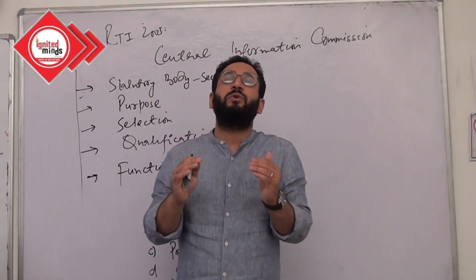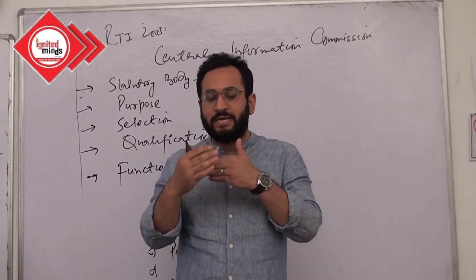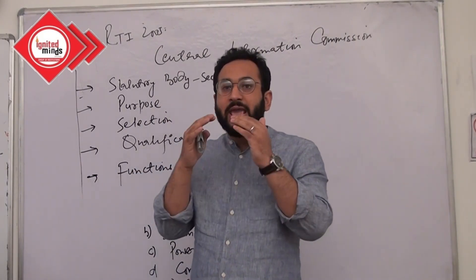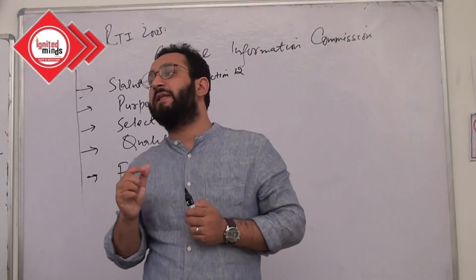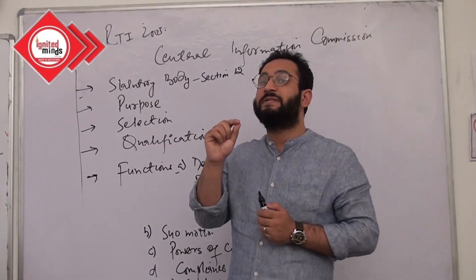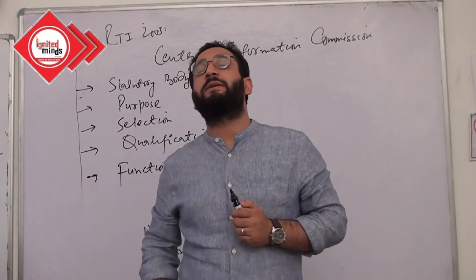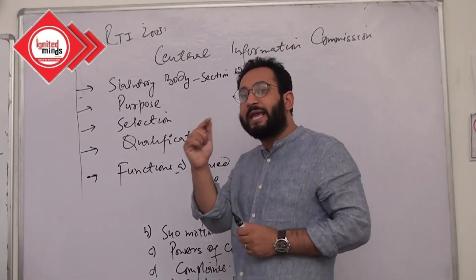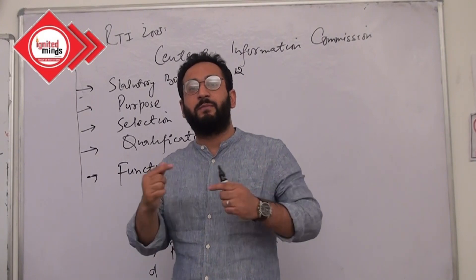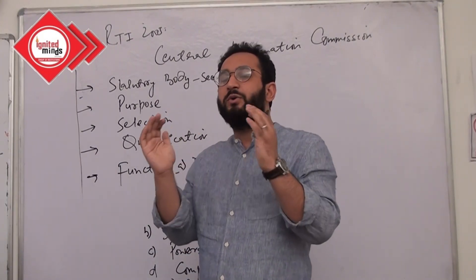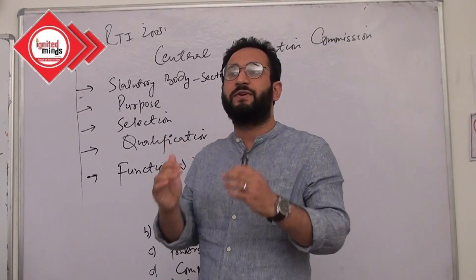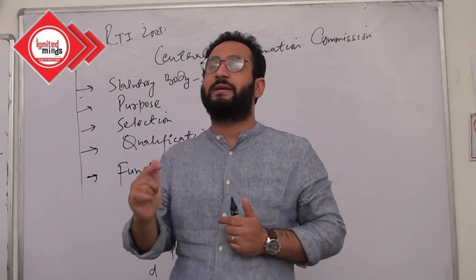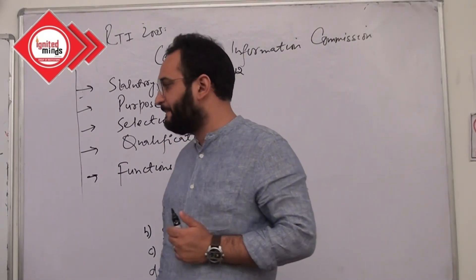In this CIC topic we should also take in detail something called the Right to Information Amendment Act 2019 — the changes made by the NDA government in 2019 in the structure, powers and functions of the Central Information Commission, which makes that amendment very controversial. We will deal with how the powers of the CIC and State Information Commission were reduced, and how their service conditions were completely put in the hands of the government — which is dangerous for a transparent governance model.